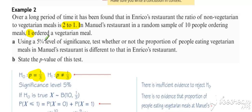It says in the question, using a five percent level of significance, test whether or not the proportion of people eating vegetarian meals is different to that in Enrico's restaurant. So different implying no direction. Alternative hypothesis is not equal to.